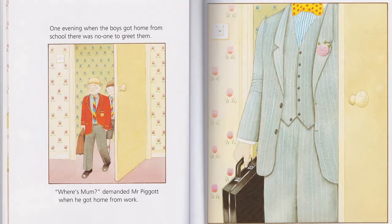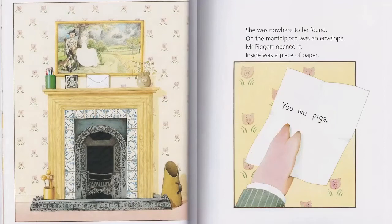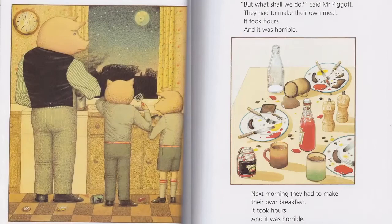One evening, when the boys got home from school, there was no one to greet them. 'Where's Mom?' 'Where's Mom?' demanded Mr. Piggott when he got home from work. She was nowhere to be found. On the mantelpiece was an envelope. Mr. Piggott opened it — inside was a piece of paper. 'What shall we do?' said Mr. Piggott. They had to make their own meal. It took hours, and it was horrible.